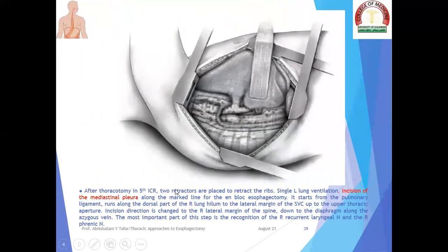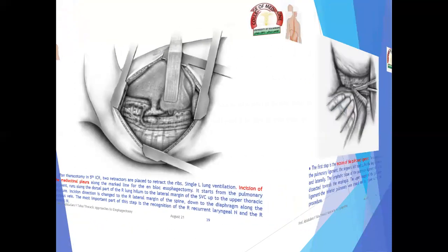After thoracotomy in the fifth intercostal space, two retractors are placed to retract the ribs with single-lung ventilation. The incision of the mediastinal pleura along the marked line for en-bloc esophagectomy starts from the pulmonary ligament lower down, runs along the dorsal part of the right lung hilum to the lateral margin of the SVC, up to the upper thoracic aperture. The incision direction then changes to the right lateral margin of the spine down to the diaphragm along the azygous vein. The most important part of this step is recognition of the right recurrent laryngeal nerve and the right phrenic nerve.